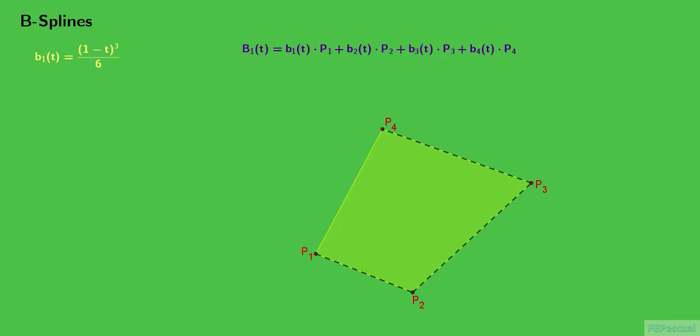Lowercase b1 of t is the cube of 1 minus t all over 6. b2 of t is t cubed over 2 minus t squared plus 2 thirds. b3 of t is minus t cubed over 2 plus t squared over 2 plus t over 2 plus 1 sixth. Finally, b4 of t is a single term, t cubed over 6.